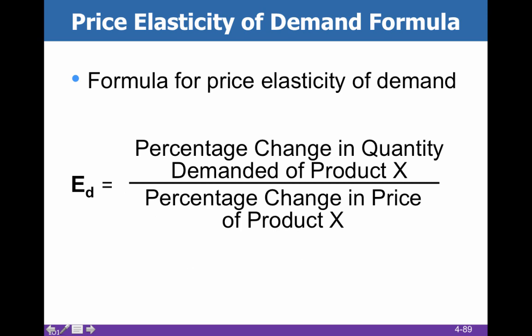Here's the formula we're going to use to arrive at the coefficient of elasticity. You take the percent change in quantity demanded of product X over the percent change in the price of product X. This basically works out as stuff over money — that's how it's easy to remember. Stuff is in the numerator, money is in the denominator.